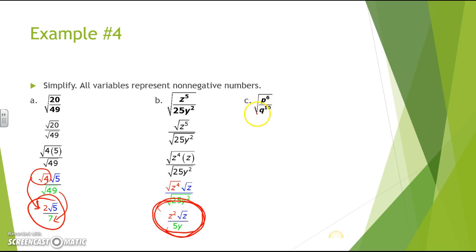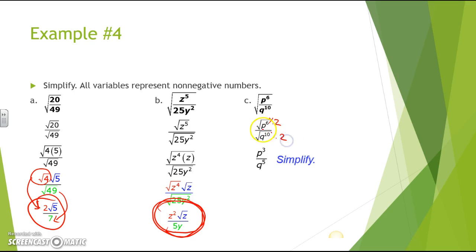For part c, we have the square root of p to the sixth over q to the tenth. When we simplify, we divide both exponents by 2: 6 divided by 2 gives 3, so that's p to the third, and 10 divided by 2 gives 5, so we get q to the fifth. The simplified answer is p to the third over q to the fifth.